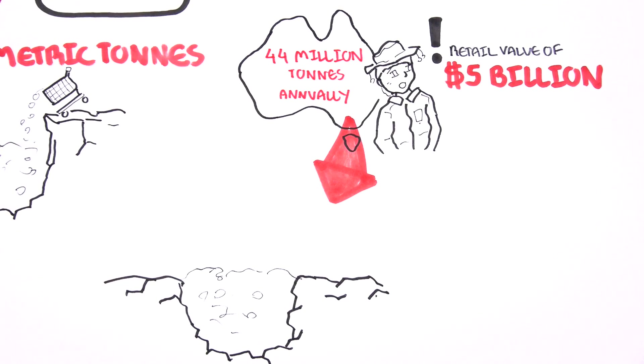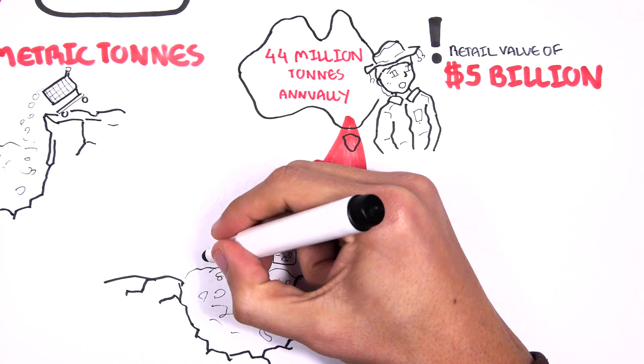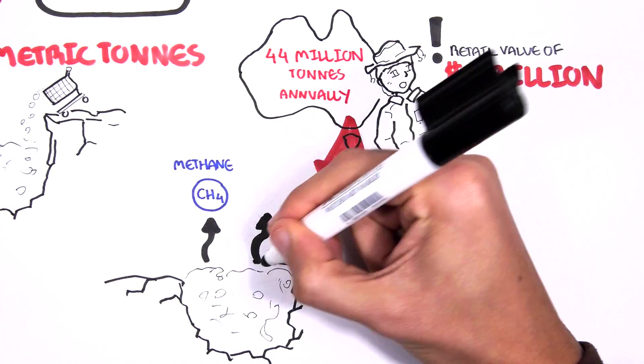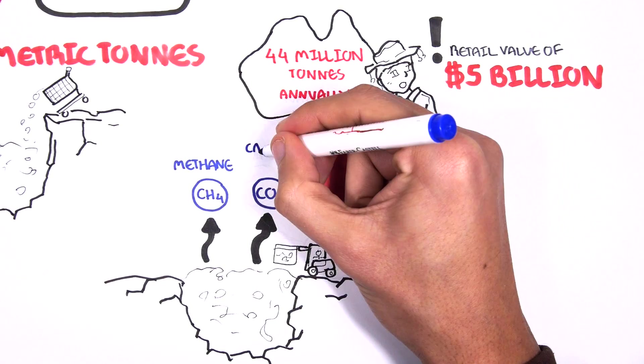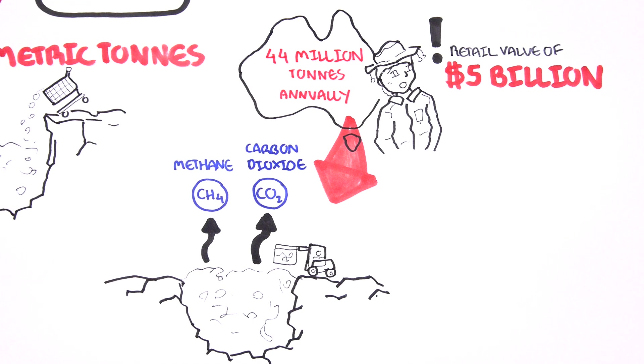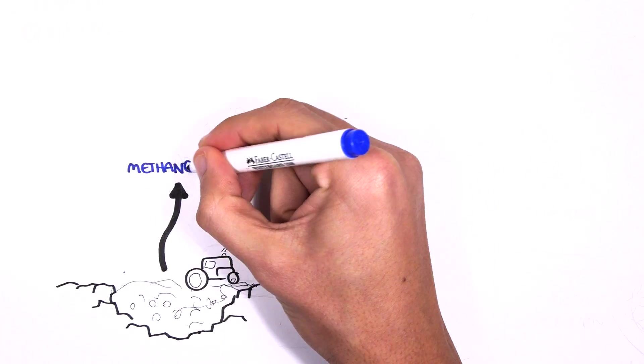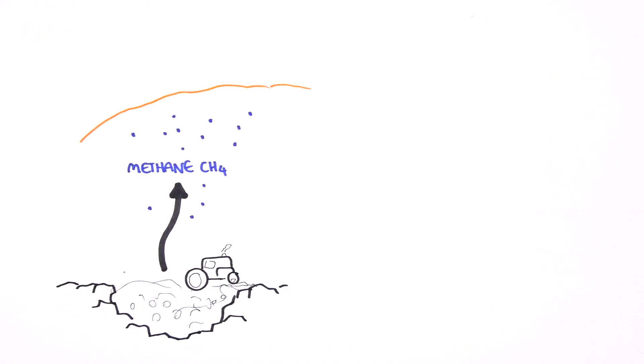The food waste is the second largest source of methane emission: 15 million tons of carbon dioxide equivalent emissions every year. Methane is a highly potent greenhouse gas.